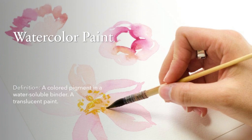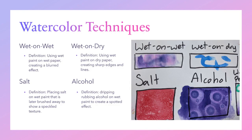Watercolor paint is a colored pigment in a water-soluble binder — a translucent paint, meaning it's a little see-through. There are four watercolor techniques we learned: wet on wet, wet on dry, salt, and alcohol.